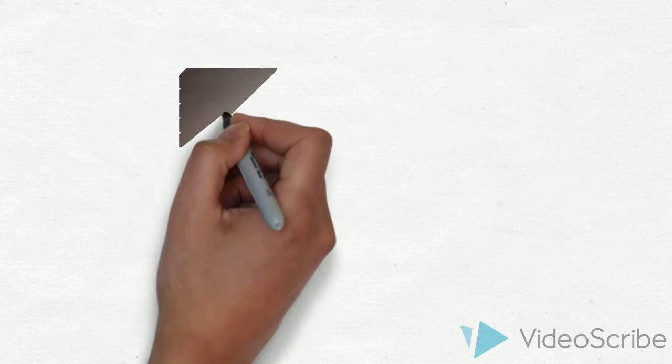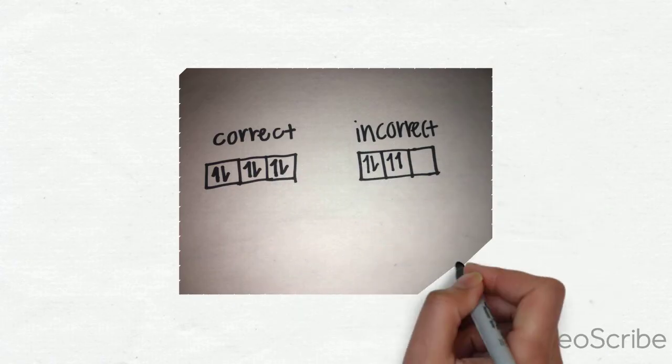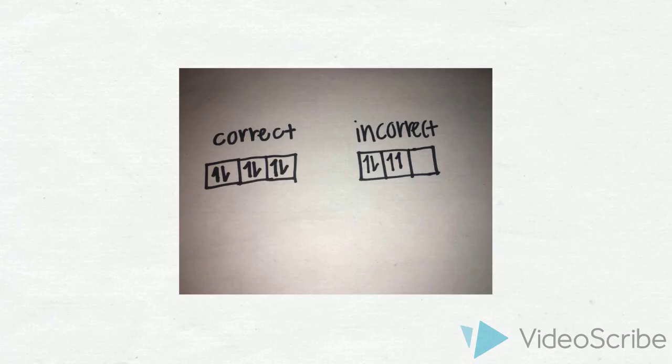The first part of this image is correct because the electrons shown are facing opposite directions in the same orbital. The second is incorrect because the electrons shown are both facing up.